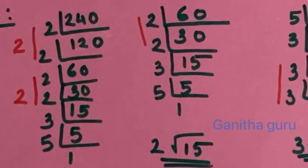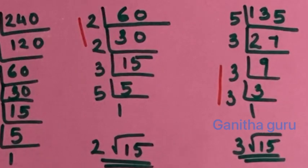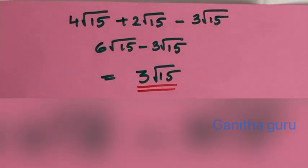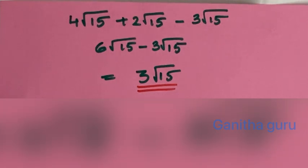16 is equal to root of 15. Again, 135 is equal to root of 15. So: 4 root of 15 plus 2 root of 15 minus 3 root of 15 equals 3 root of 15. We add each root of 15 coefficient: 4 plus 2 minus 3 equals 3 root of 15.